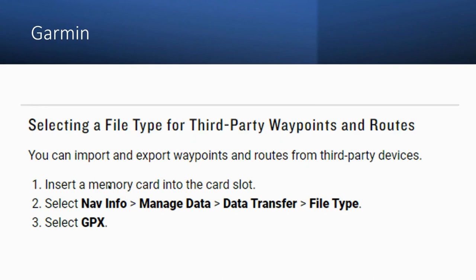Let's talk about Garmin graphs. Garmin is probably the easiest to import. All you have to do is insert the memory card into the slot, select Nav Info, then go to Manage Data, then Data Transfer, then File Type. You're going to see the name of the lake with .gpx — that's the file you want to import. Just import it in and you're on your way. Again, you don't have to leave the card in the graph.